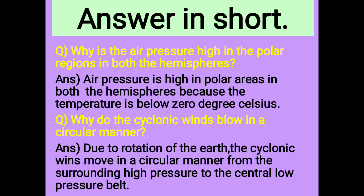Question: Why do the cyclonic winds blow in a circular manner? Answer: Due to rotation of the earth, the cyclonic winds move in a circular manner from the surrounding high pressure to the central low pressure belt.